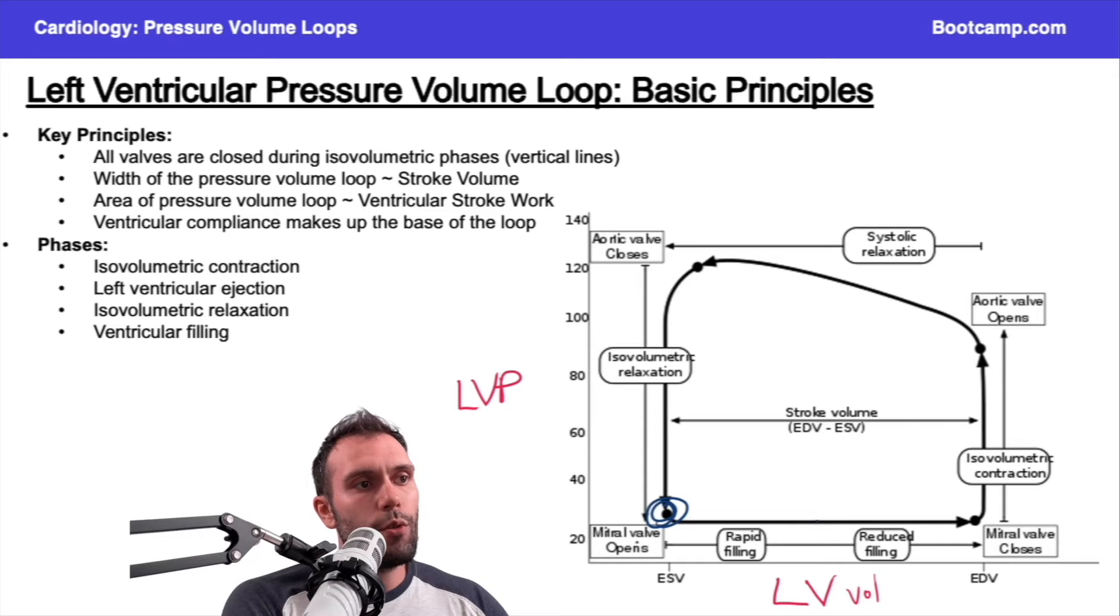At this point, the mitral valve is going to open and we're going to get blood filling from the left atrium into the left ventricle. This line here is representing filling because remember the x-axis is primarily going to be volume. We're increasing the volume going into the left ventricle.